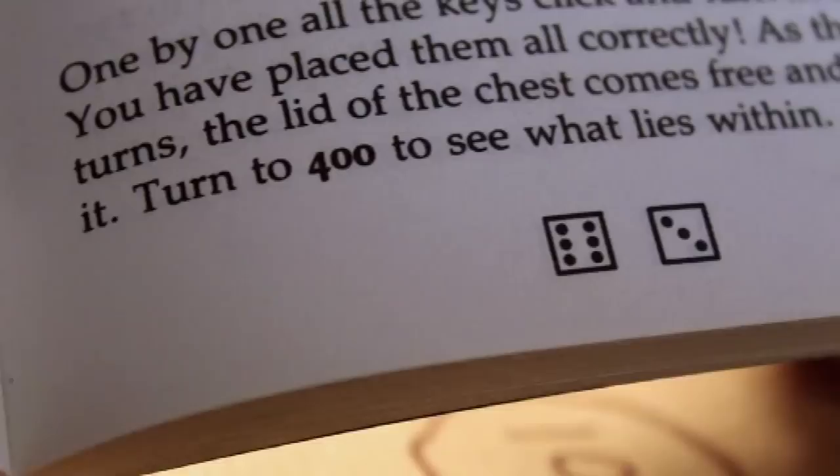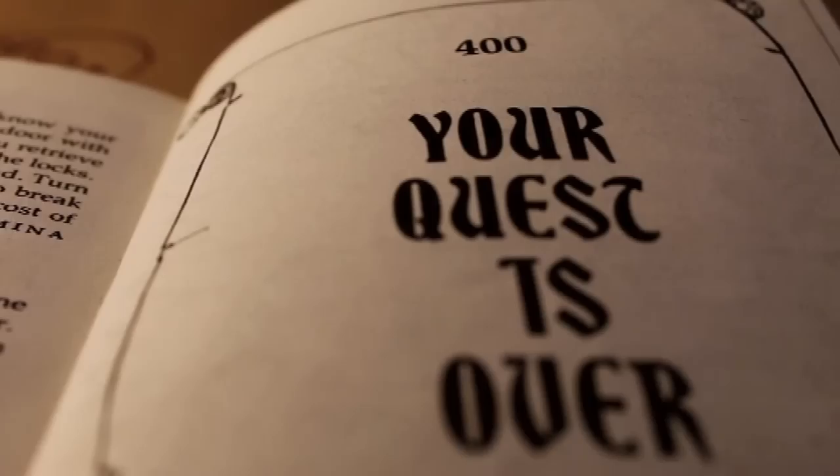You might think that this book's about going and killing the warlock and stealing his treasure. But actually, the point of all of these Fighting Fantasy books is to turn to section 400. And that's the end. You know when you see turn to section 400, you know you've finished because that's always the last section. So it gives you a sort of warm feeling inside. Yay, I did it!